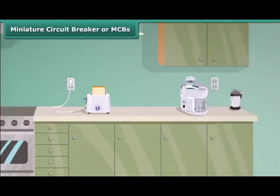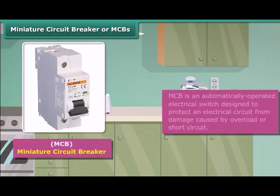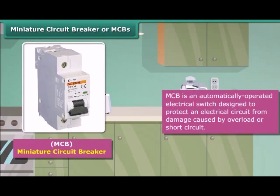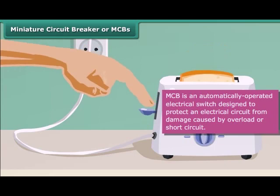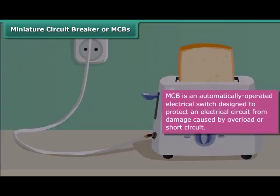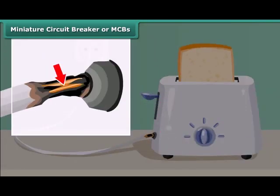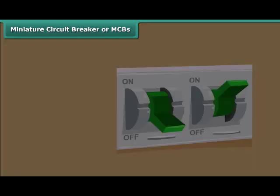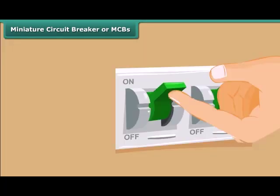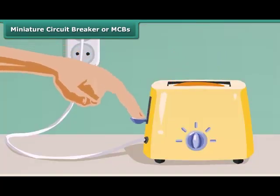A Miniature Circuit Breaker, or MCB, is an automatically operated electrical switch designed to protect an electrical circuit from damage caused by overload or short circuit. Whenever there is a fault in a circuit, the MCB interrupts continuity to discontinue electrical flow immediately. It can be reset to resume normal operation.